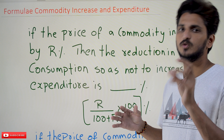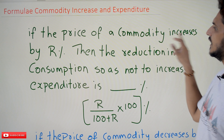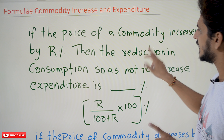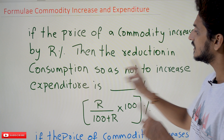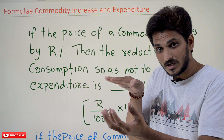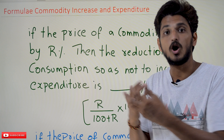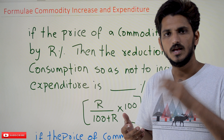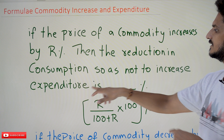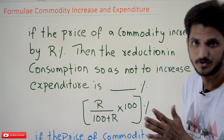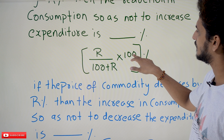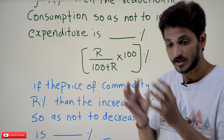Today we are going to discuss and derive these formulas, then do one example. If the price of a commodity increases by r percent, then the reduction in consumption so as not to increase the expenditure is a certain percentage. That percentage is given as r divided by (100 plus r), multiplied by 100 percent — that is how much we need to reduce our consumption.